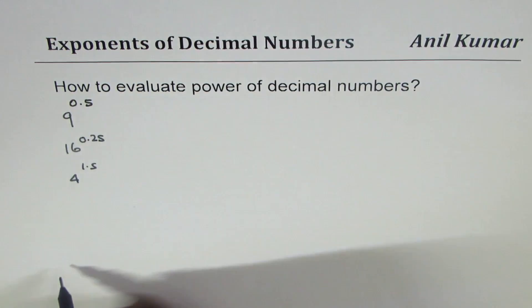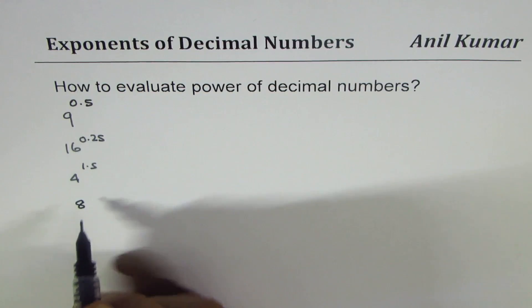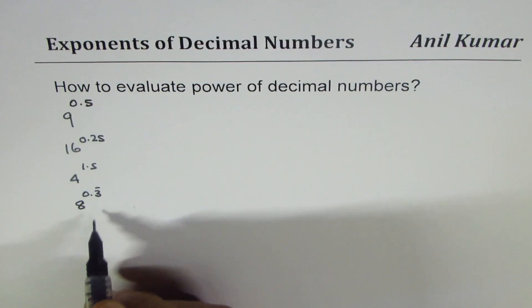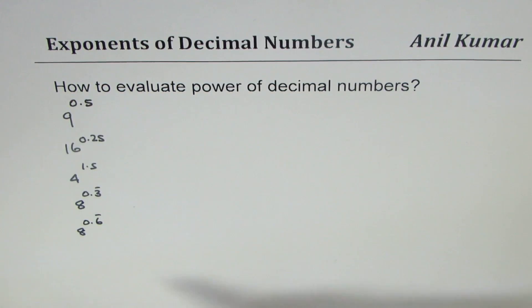All these are decimal numbers. We could have recurring decimals also, like 0.3 recurring. Let me make this as 0.6 recurring. So these are a few examples which we are going to work with.